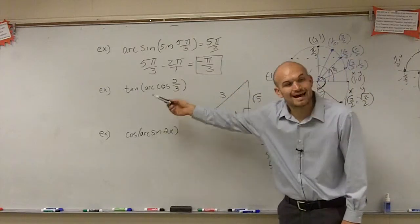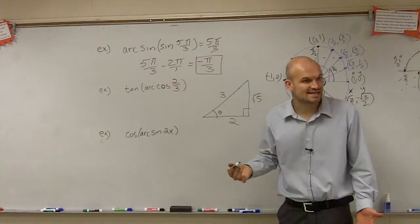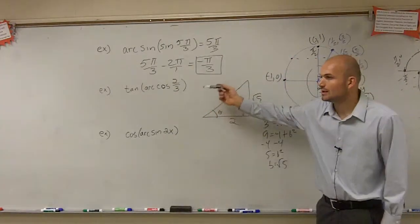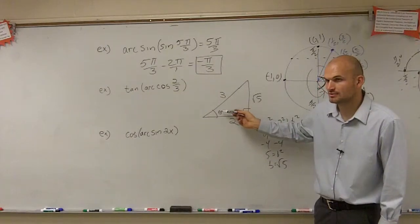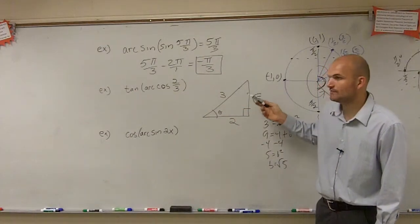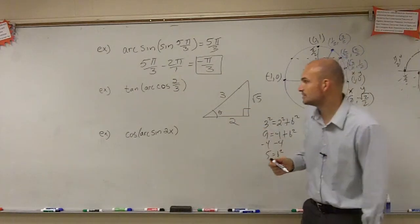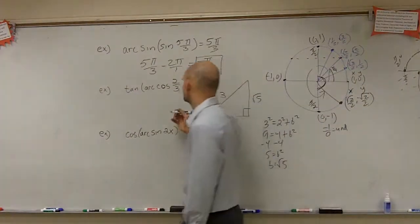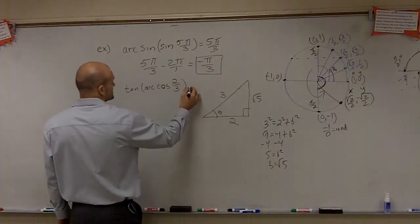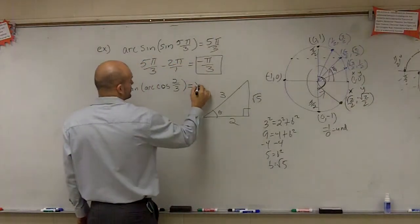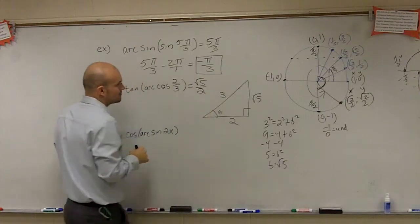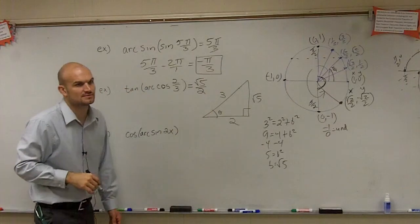Therefore, I now need to figure out what the tangent is. The tangent of this angle is going to be square root of 5 over 2 — opposite over adjacent.